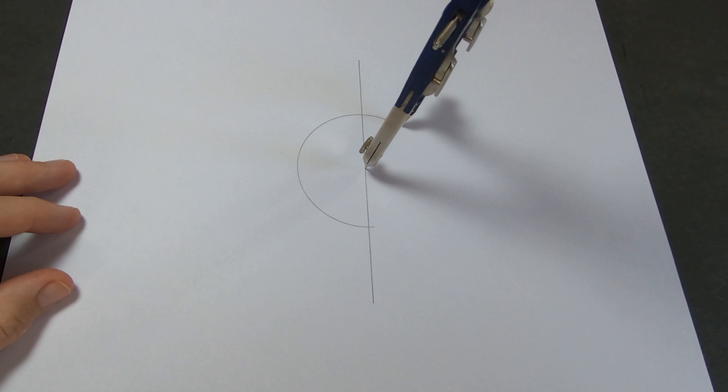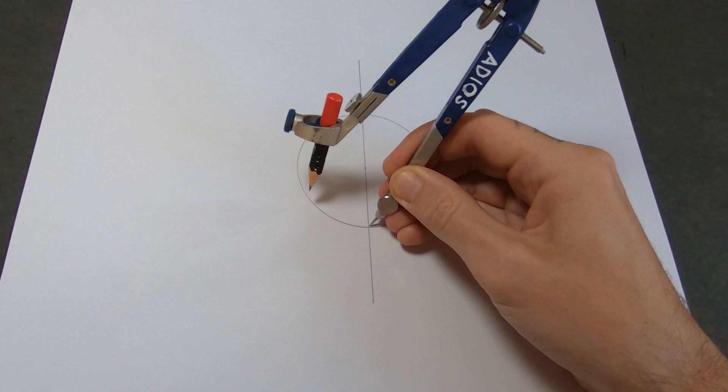Then I'll move down to this intersection where the line crosses the circle. Put my compass point there. Draw another circle.